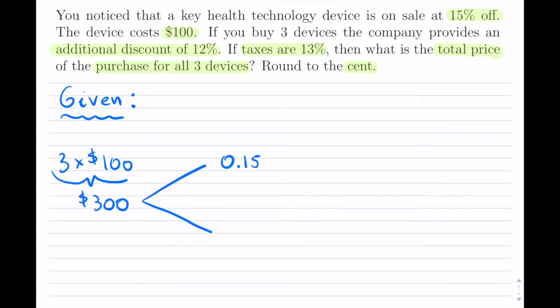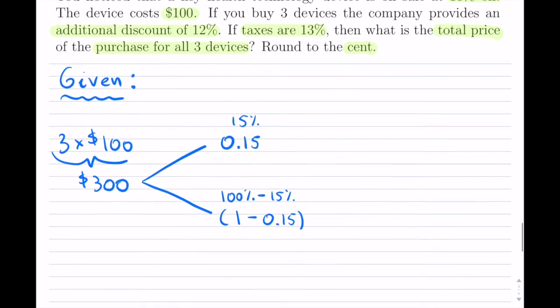On the other branch, I go ahead and do, basically, 100% minus the 15% discount. And we're supposed to do that as a decimal. So, 100% is 1 minus 0.15. That is my first discount.